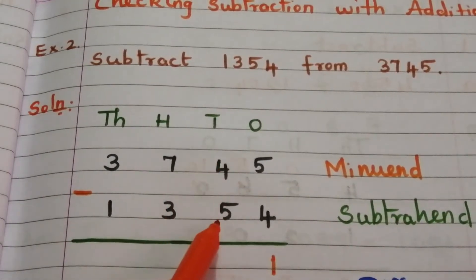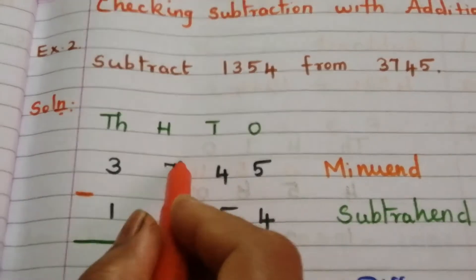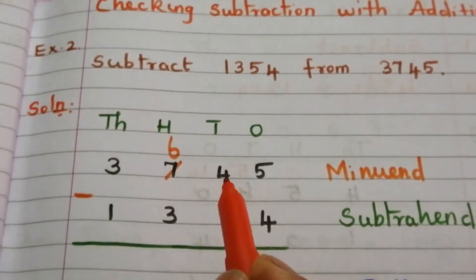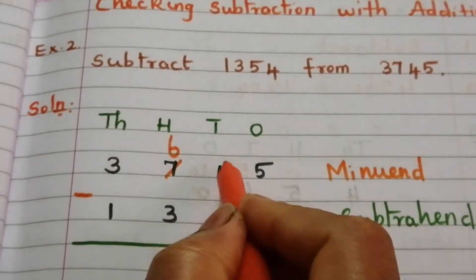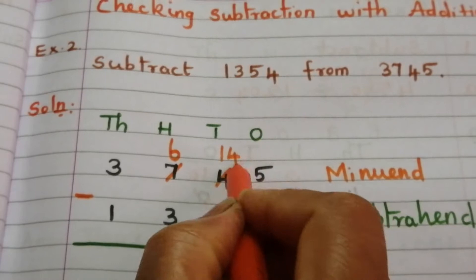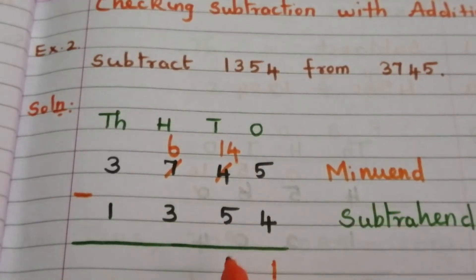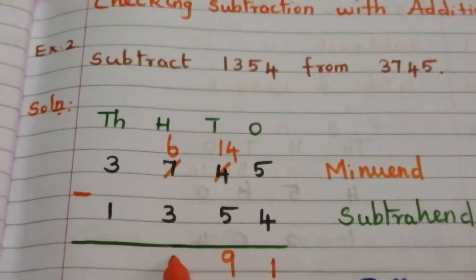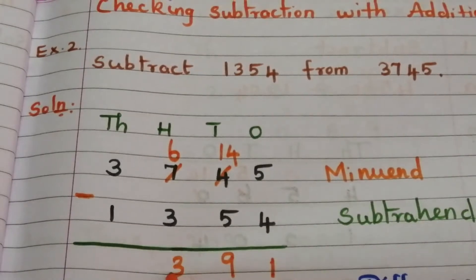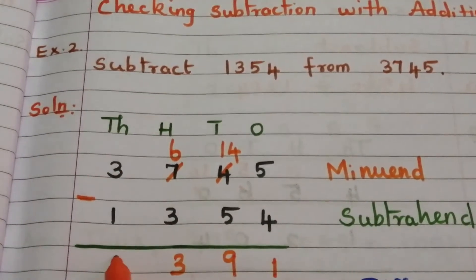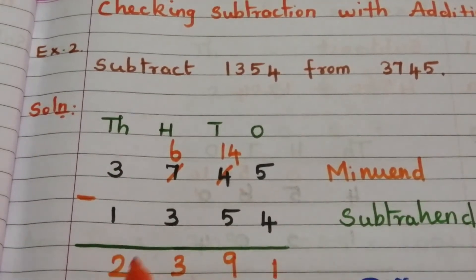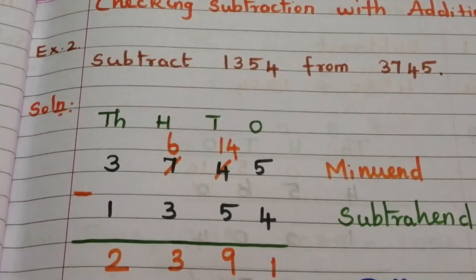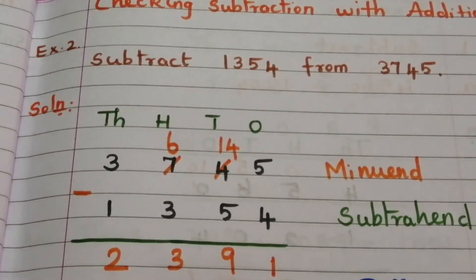In the tens place, 4 is less than 5, so borrow from 7. 7 becomes 6 and this 4 becomes 14. 14 minus 5 is 9. Then 6 minus 3 is 3, and 3 minus 1 is 2. So the answer is 2391. This is called the difference.